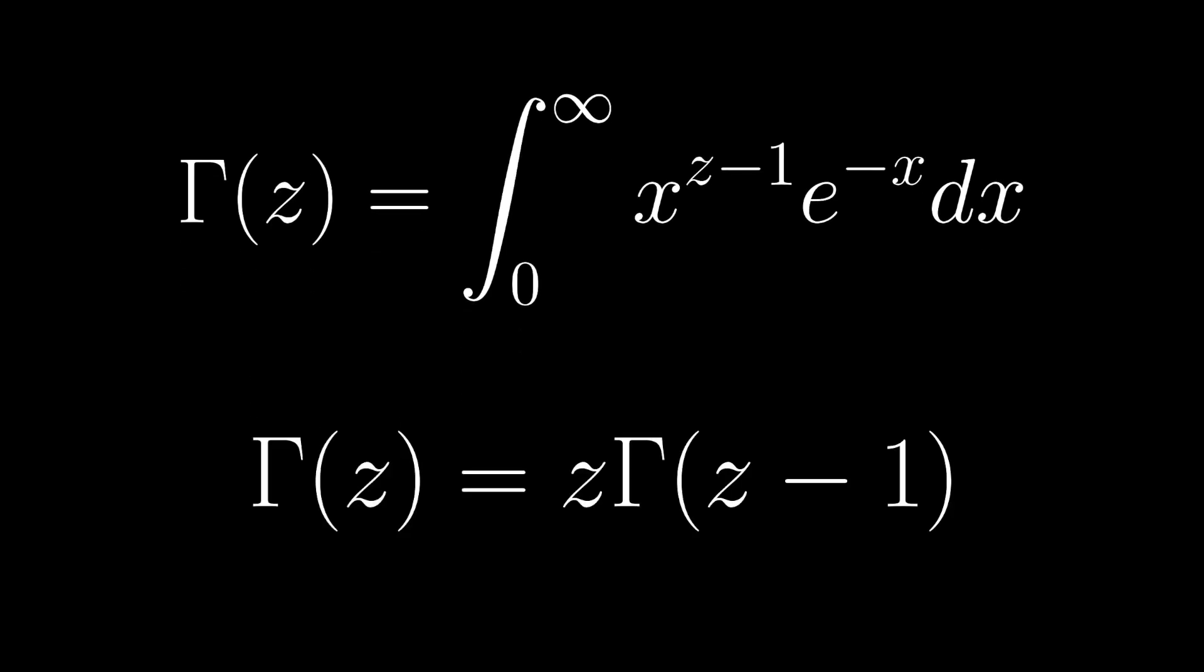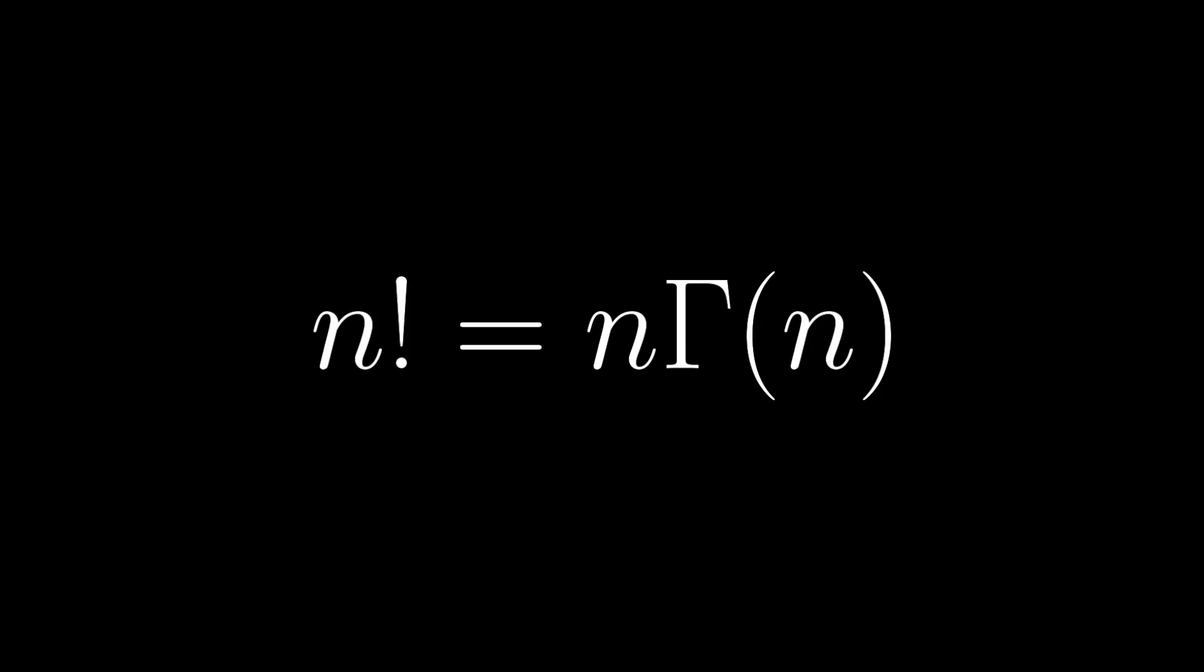And for any number z, the value of the gamma function is z times gamma of z minus 1. This relation looks a lot like the factorial function. And it turns out n factorial is equal to n times gamma of n.